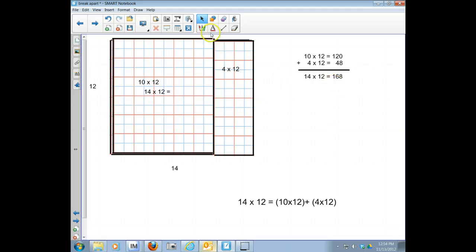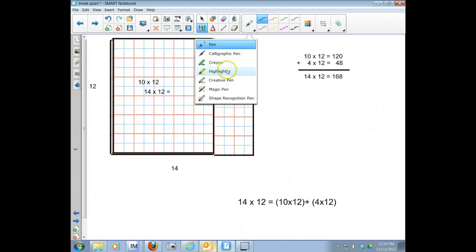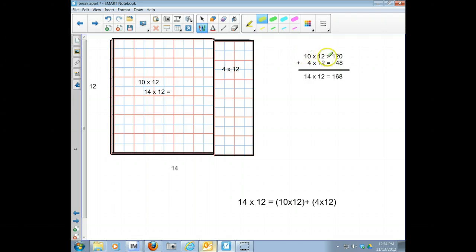Now one thing I want to draw your attention to is that we only broke apart one number. The 12 stayed the same. And these numbers, they add up: 10 plus 4 equals 14, and so do these numbers: 120 plus 48 equals 168.